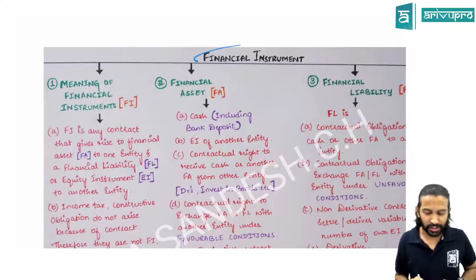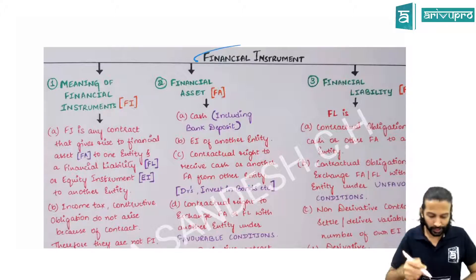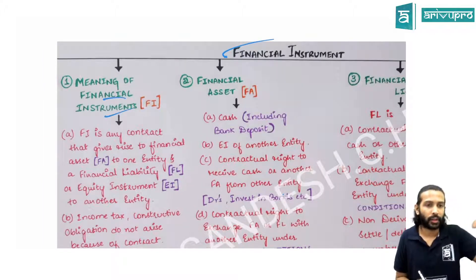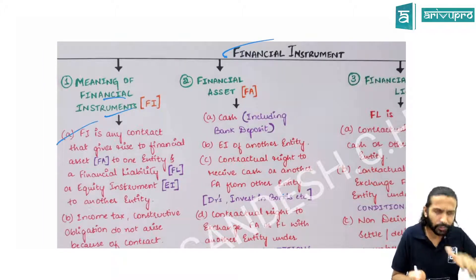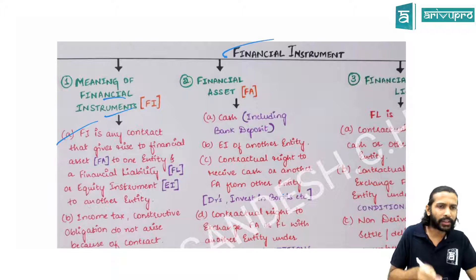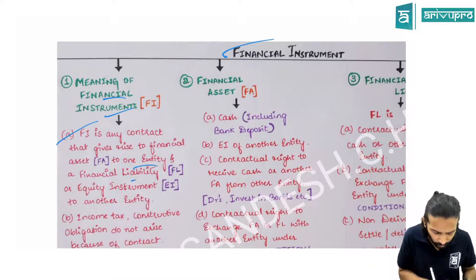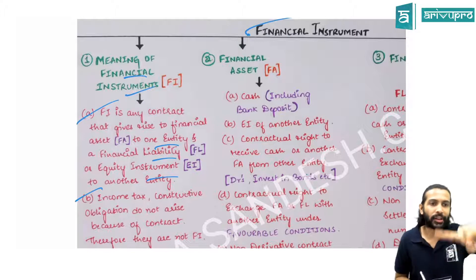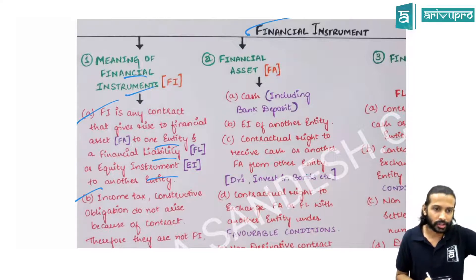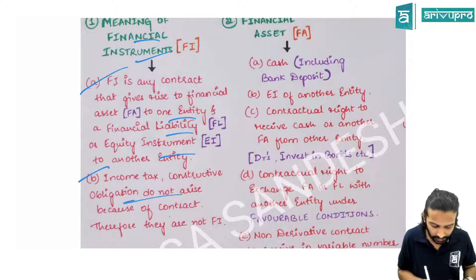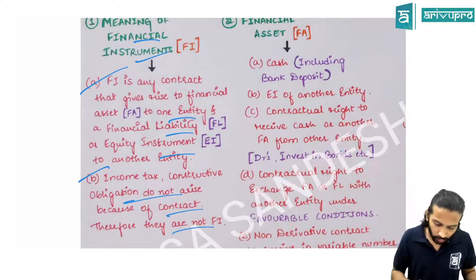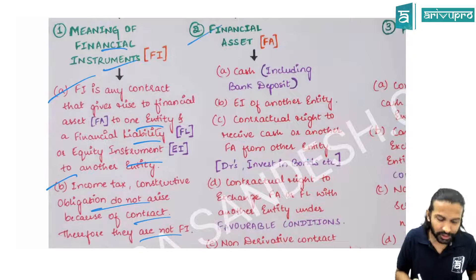Let's quickly revise the financial instruments topic through charts. The meaning of a financial instrument: it is a contract that will create either a financial asset to one entity, or a financial liability or equity to another entity. It must arise from a contract — income tax obligations and constructive obligations under Ind AS 37 are not financial instruments.